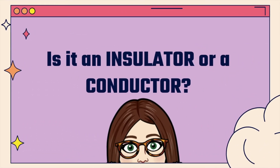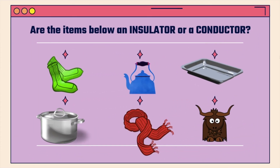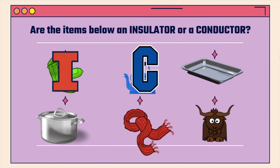Are the items below an insulator or a conductor? First off, socks — I usually put socks on to keep my feet warm, so that means they are an insulator. What about a kettle? You put water in a kettle to warm up the water, so a transfer of heat is taking place — that kettle must be a conductor.